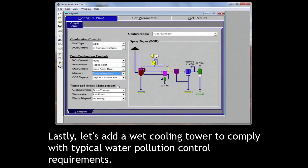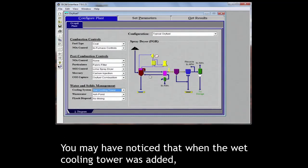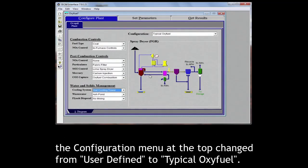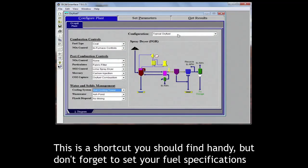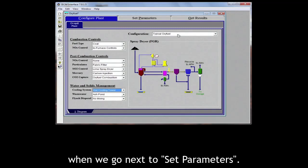Lastly, let's add a wet cooling tower to comply with typical water pollution control requirements. You may have noticed that when the wet cooling tower was added, the configuration menu at the top changed from user-defined to typical oxyfuel. This is a shortcut you should find handy, but don't forget to set your fuel specifications when we go next to set parameters.